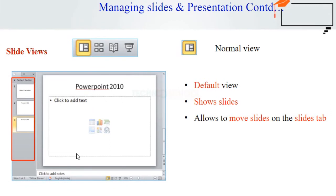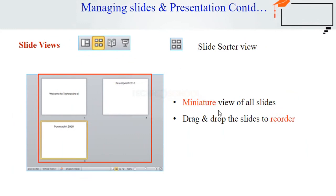Normal view is the default view where you can create and edit your slides. You can also move slides in your slide tab in the left pane. In Slide Sorter view, miniature-sized slides are arranged on the screen. You can drag and drop slides easily in this view, reorder them, and see more slides at one time — it is a good view to see that all the slides you need are created and in order.